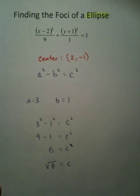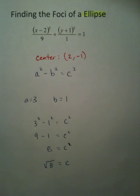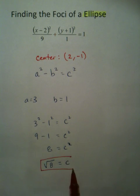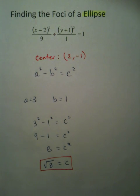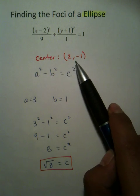Now, this c value, to find the foci, what you're going to do is you need to add this to your center. So this has to be added to your center, and it has to be subtracted from your center. But the key idea is, you have a center, you have a 2, you have a negative 1.